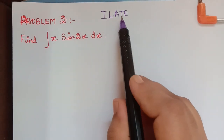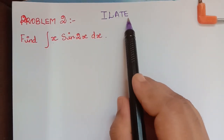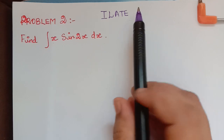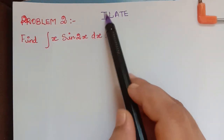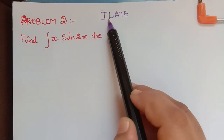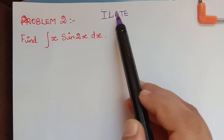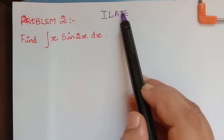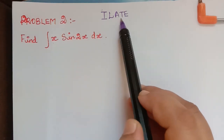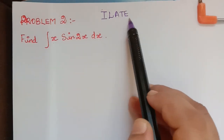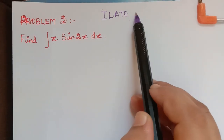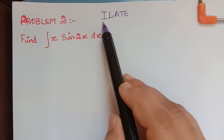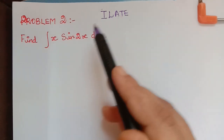If you go and see that lecture, you will understand it better. I stands for inverse, L stands for logarithmic, A for algebraic, T for trigonometric, and E for exponential. We have to choose the function u in this order only.